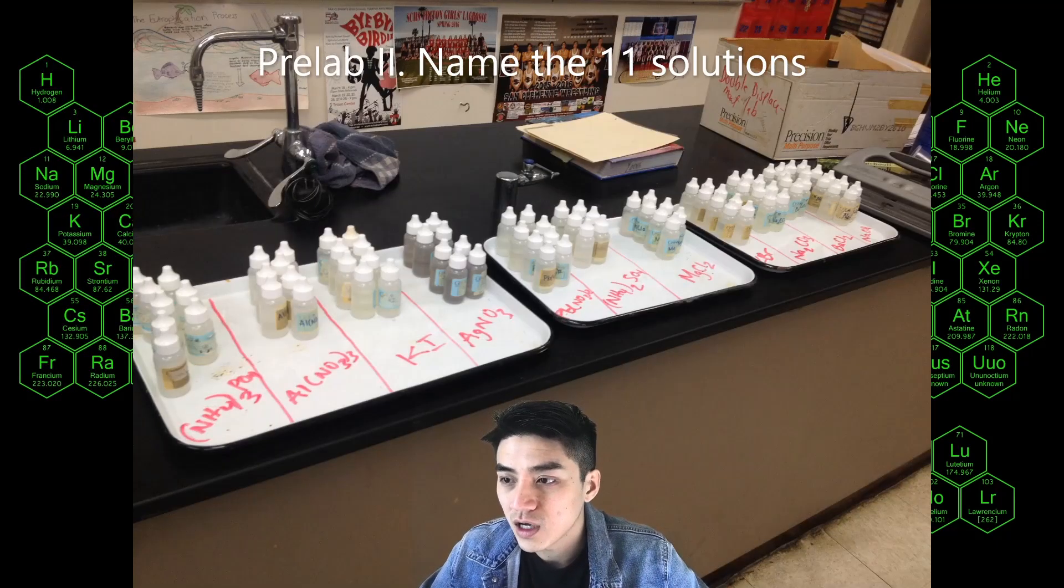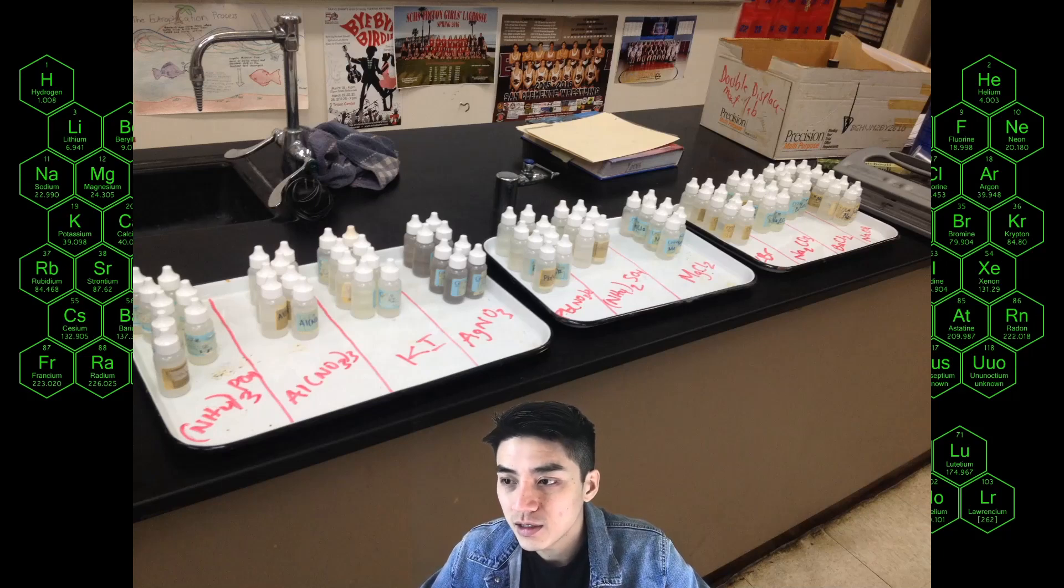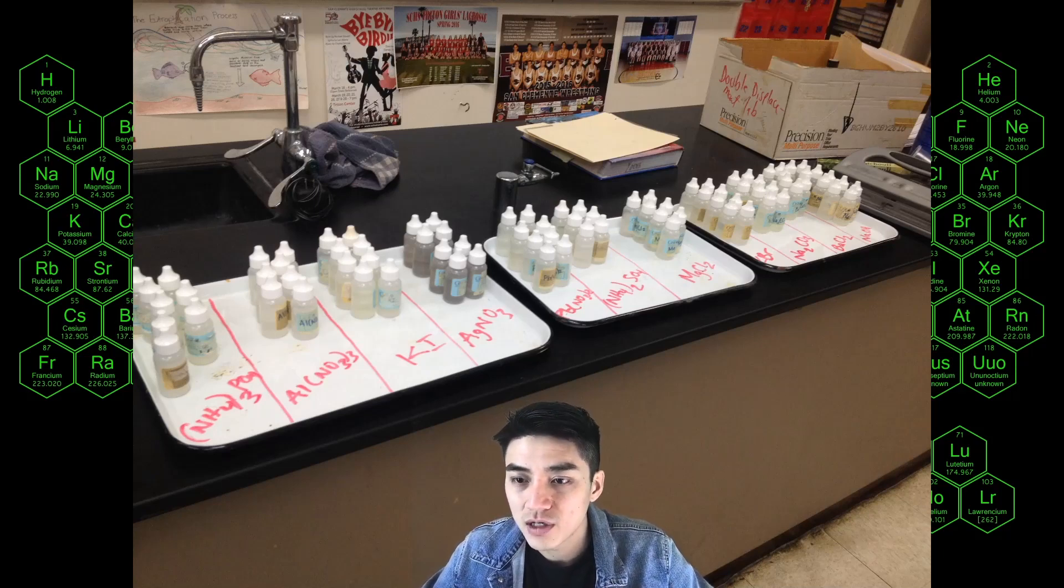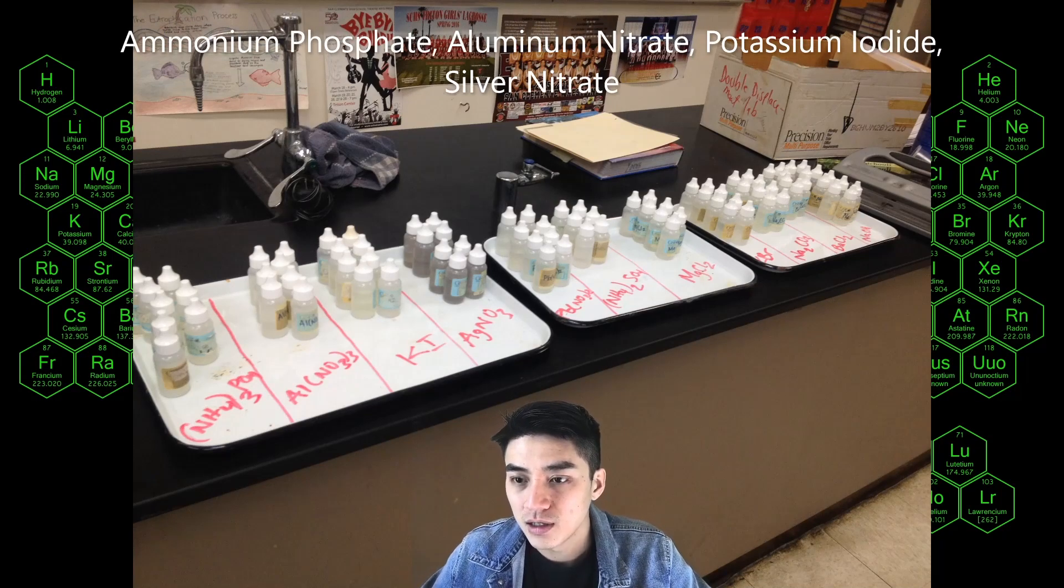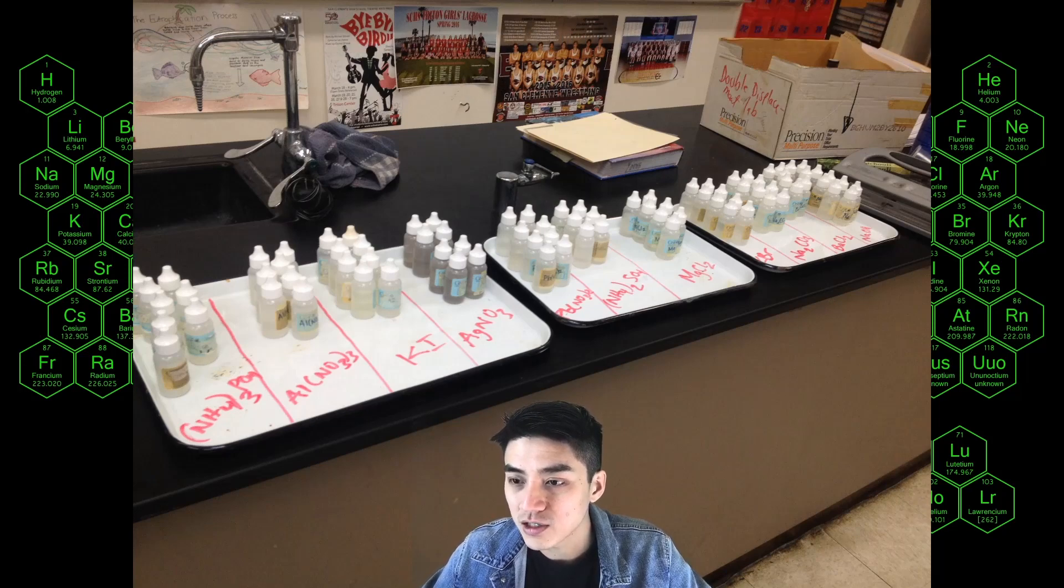These are the 11 chemicals we're going to use in lab today. You will have to name all 11 but I'll give you four of them. So from left to right you have ammonium phosphate, aluminum nitrate, potassium iodide, and silver nitrate.